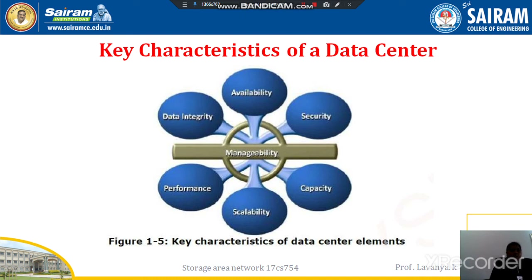The fourth characteristic is performance. All elements of the data center should provide optimal performance based on the required service level. The fifth is data integrity, which references mechanisms such as error correction and parity bits to ensure data is stored and retrieved exactly as it was received. The sixth is capacity — the data center operations require resources to store and process large amounts of data very efficiently.